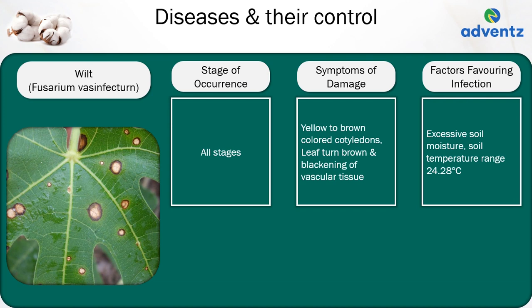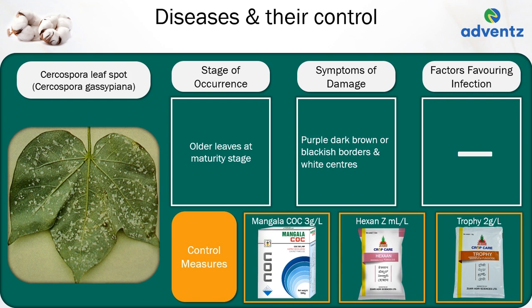The next disease is Cercospora leaf spot. The causal organism is Cercospora gossypina. Cercospora leaf spot occurs in older leaves at the maturity stage. The symptoms of damage are purple dark brown or blackish borders with white centres observed on the plant. Control: apply Mangala COC at 3 grams per litre, or Jai Kisan Hexan, or Jai Kisan Trophy at 2 grams per litre.